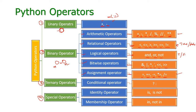The next one is ternary operator. This is a special type of operator that will perform on three different operands. Here, question mark and colon are used. The condition will be checked first — if the condition is true, the first value will be taken; if the condition is false, the second value will be taken. So this is called the ternary operator, and we have only one: question mark followed by colon.